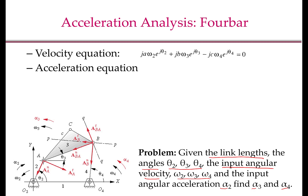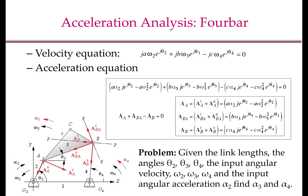The steps in performing acceleration analysis, or computing alpha 3 and alpha 4, are analogous to the steps we took for velocity analysis. Here, we have to first start with the loop closure equation at the velocity level, which is shown here and which we had derived in the previous module. Since the left-hand side has to be equal to 0 for all time as the mechanism moves, the time derivative of the left-hand side is also 0. Taking the time derivative of each term gives a fairly complicated equation, which is shown here.